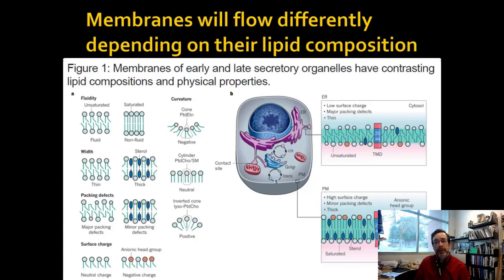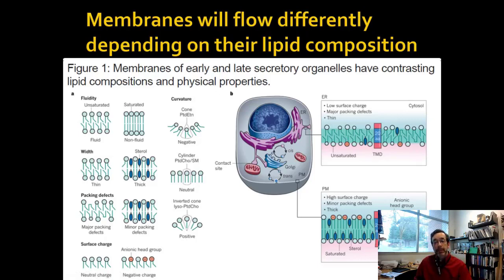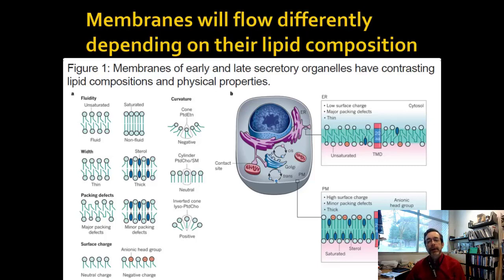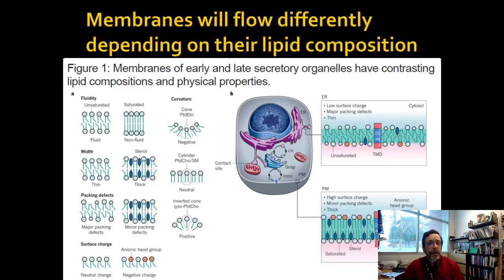Membranes need to have a certain amount of fluidity, and you can have little curvatures in the membrane as well. Looking at different membranes in the figure — the ER membrane on top and the plasma membrane on the bottom — these can be slightly different thicknesses and different fluidities because they have different jobs. Their composition helps determine that they are the right amount of fluid. For example, the plasma membrane is actually thicker: a protein crossing it is about 25 amino acids thick, whereas a protein crossing the ER membrane is only about 20 amino acids thick. Each membrane has its own composition and function.